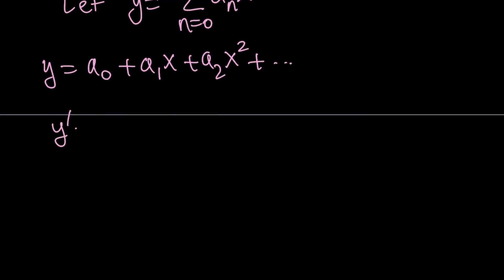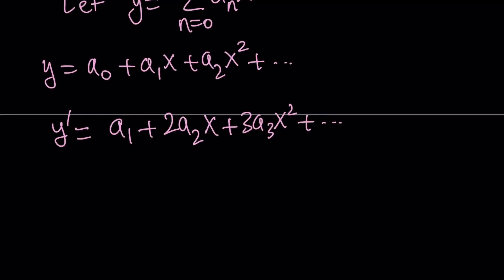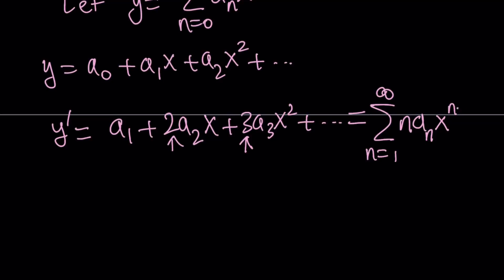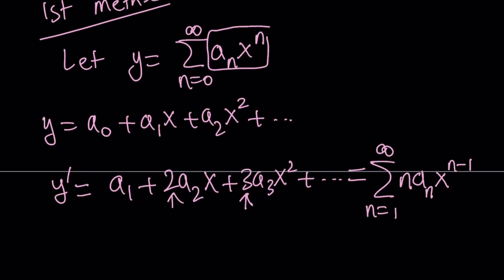Using this idea, we can differentiate the series and plug it into our original equation. So Y prime is going to be: A sub 0 is constant so it drops out, leaving A sub 1, plus 2 A sub 2 times X, plus 3 A sub 3 times X squared, and so on. We can write this with the summation symbol as the sum from N equals 1 to infinity of N times A sub N times X to the power N minus 1, since the N equals 0 term is gone.